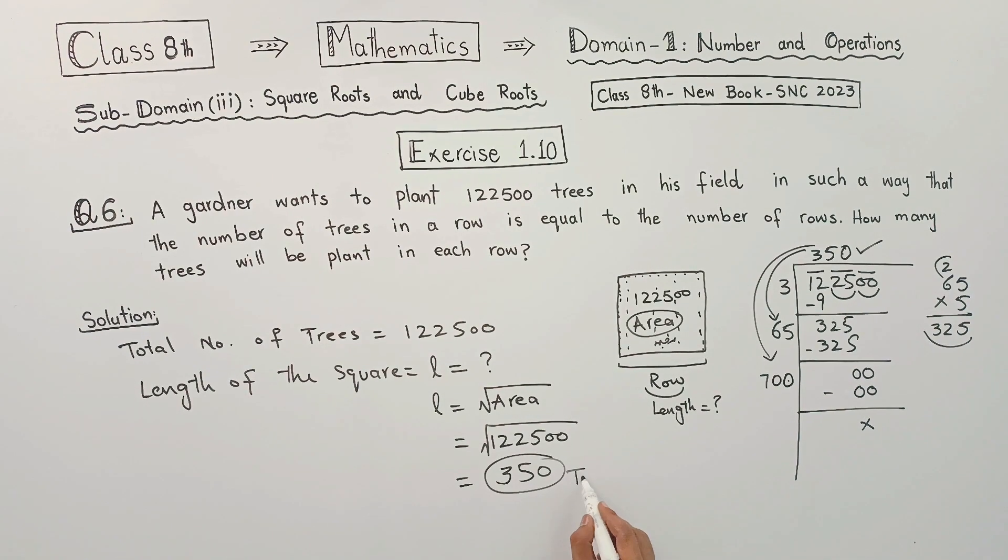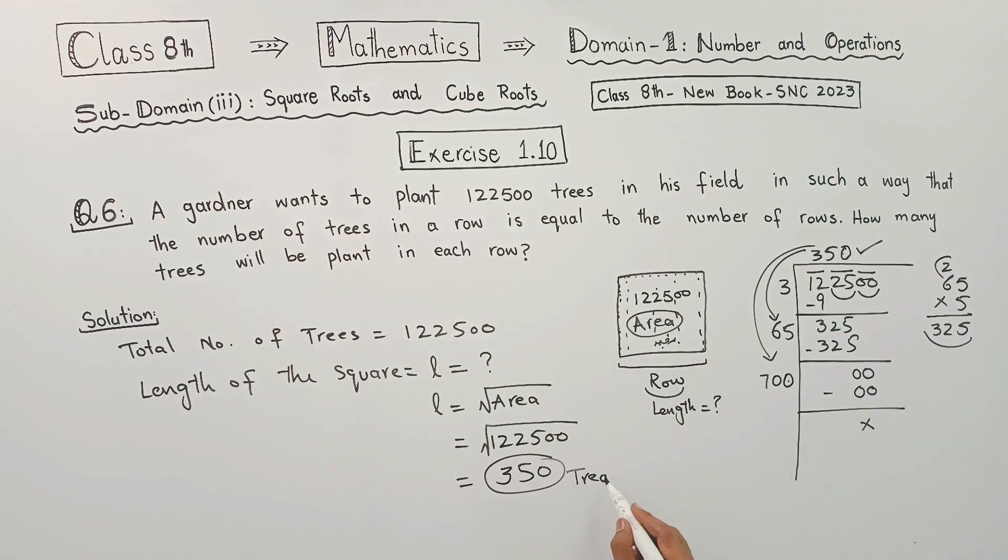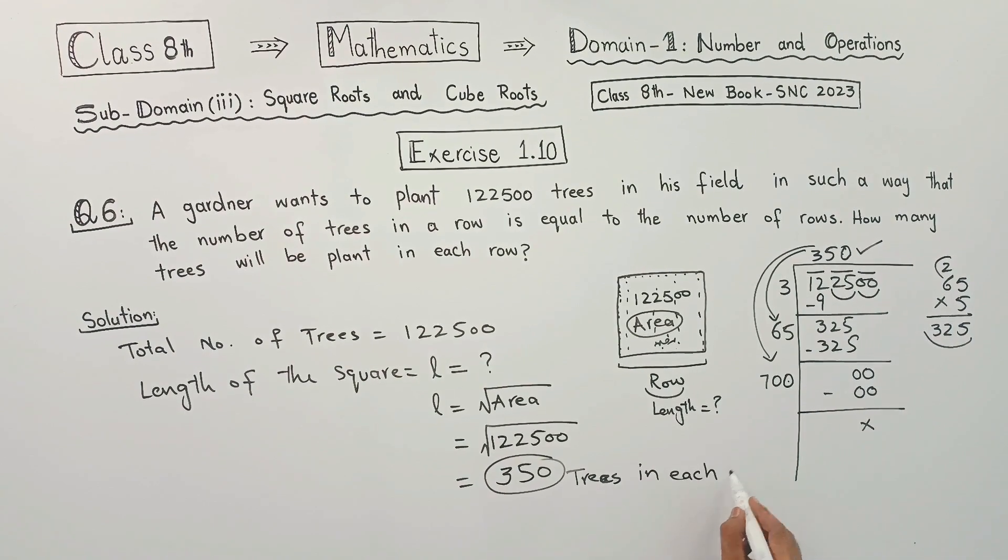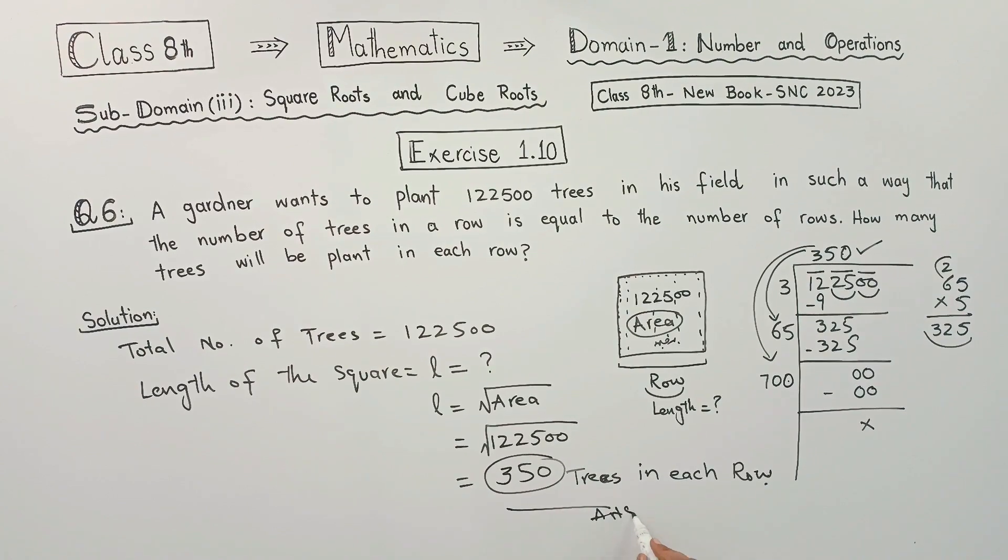And here what we actually have are trees, because in this row there are trees planted. So these are all our trees in each row. Therefore, 350 is our answer.